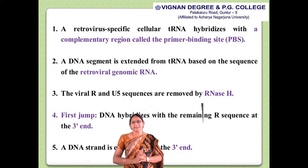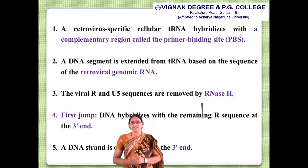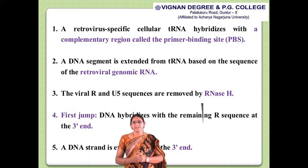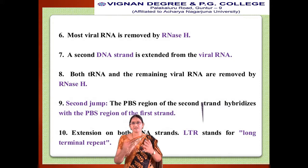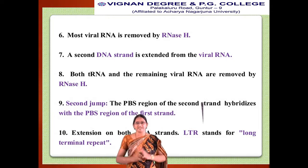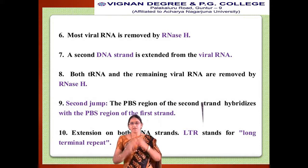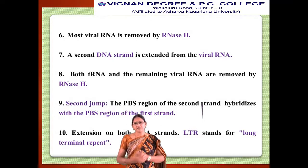In summary, the theoretical steps are: the DNA segment is extended from tRNA based on the retroviral genomic RNA sequence; the viral repeats and duplex sequences are removed by RNase H activity; the first jump occurs — DNA hybridizes with the remaining R sequence at the 3' end; the DNA strand is extended, most viral RNA is removed by RNase H; a second DNA strand is extended from the viral RNA; both tRNA and remaining viral RNAs are removed; the second jump occurs; the PBS region of the second strand hybridizes with the PBS of the first strand; and extension on both strands forms the long terminal repeats.